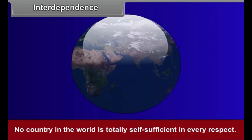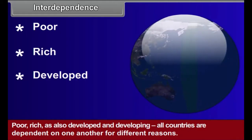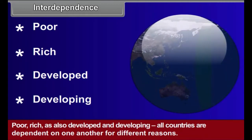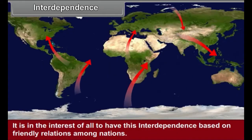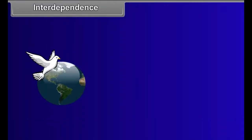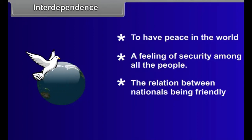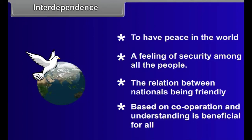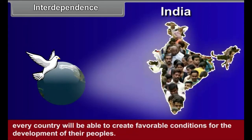No country in the world is totally self-sufficient in every respect. Poor, rich, as also developed and developing — all countries are dependent on one another for different reasons. This is known as interdependence. It is in the interest of all to have this interdependence based on friendly relations among nations. It is extremely important to have peace in the world and a feeling of security among all the people. The relations between nations being friendly and based on cooperation and understanding is beneficial for all. When there is international peace and security, every country will be able to create favorable conditions for the development of their peoples.